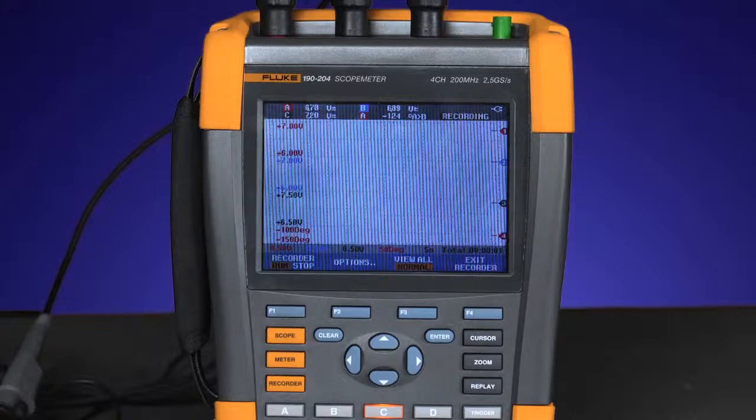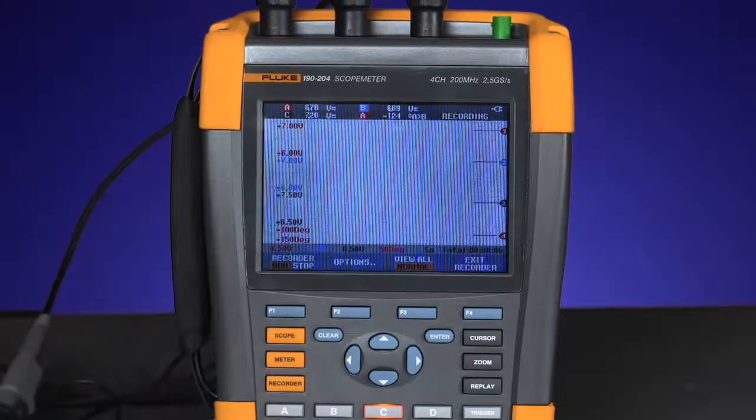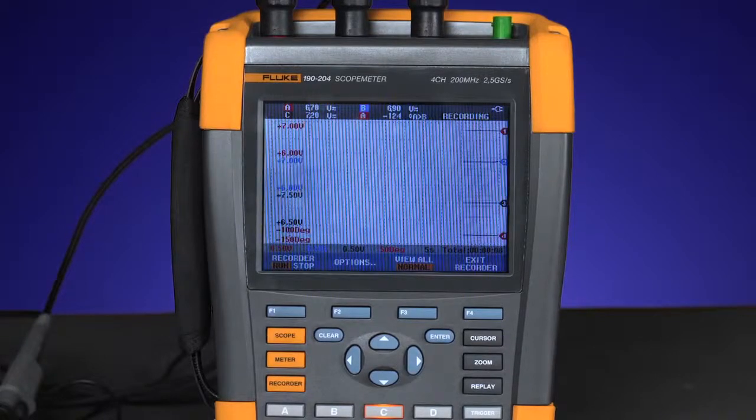The oscilloscope will acquire the input signal, measure the values, and store the min-max values in memory, holding major event changes in record.